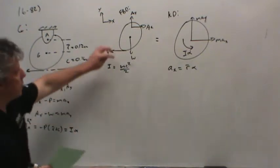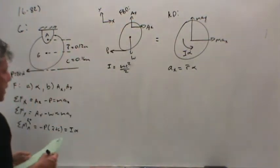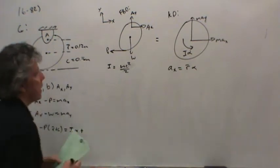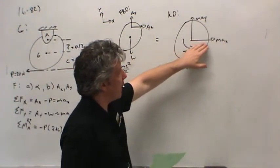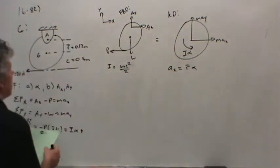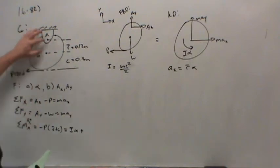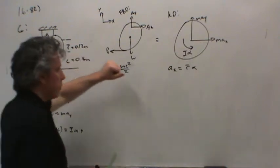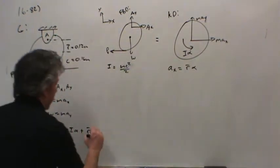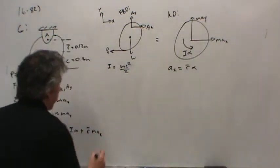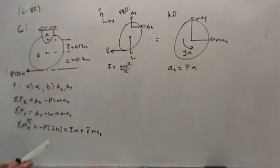That would equal I alpha, except I'm summing moments about a point other than the center of gravity. So I need to add the effect of the dynamic moments. Plus the distance from A to G, where M Ax is applied, is just R bar multiplied by M Ax. M Ay passes right through A, so it does not appear in the equation.